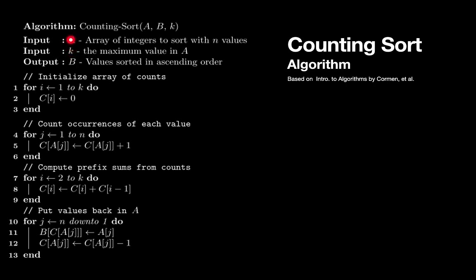So imagine k is 5. That means all of the elements in our array are going to be numbers 1 through 5. When our algorithm is all done it's going to put the values of A into a secondary array called B and it'll put them in there in ascending order.